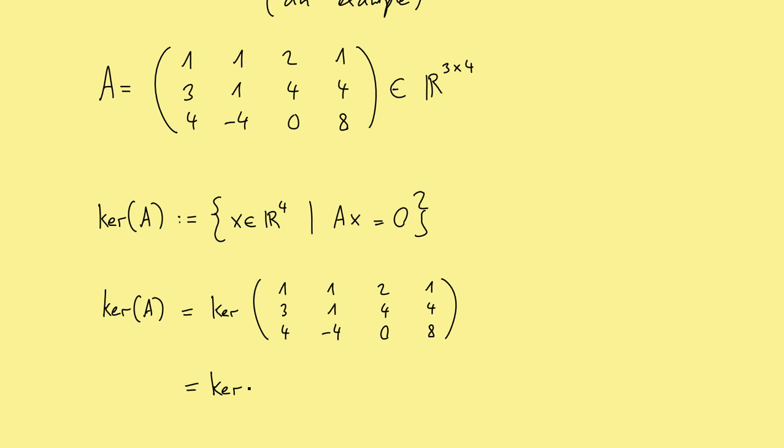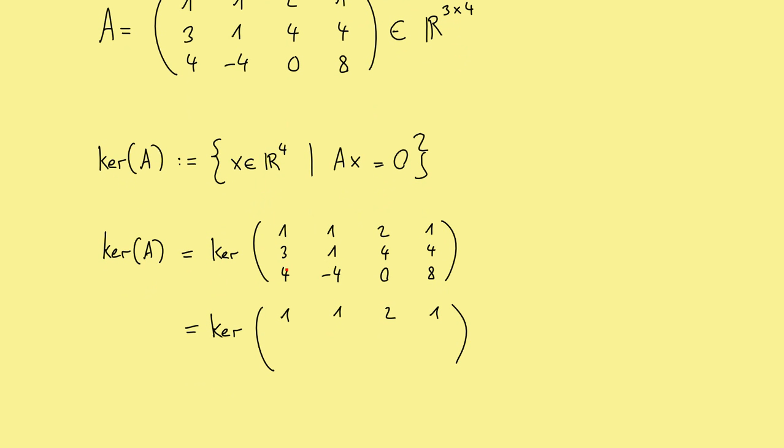Now, we want to change the second and the third row in such a way that we have to create zeros here in the first column. So meaning we have to add on the second row a multiplier of the first row. So minus 3 times the first row gives us what we want here. So 0 here, then we have minus 2 and minus 2 and 1.